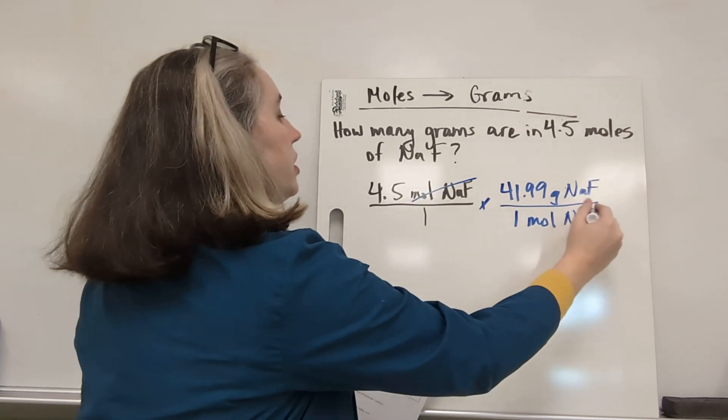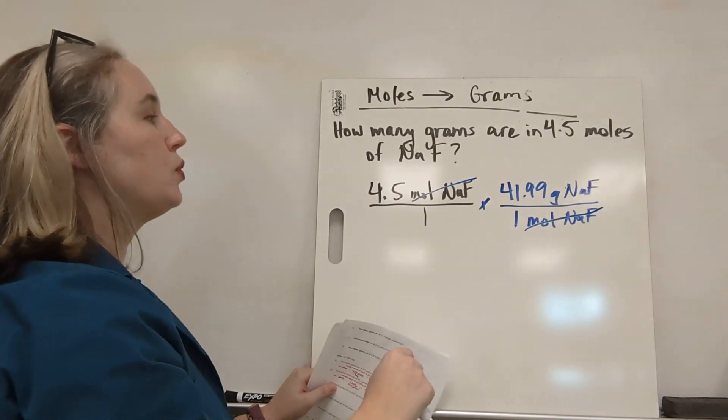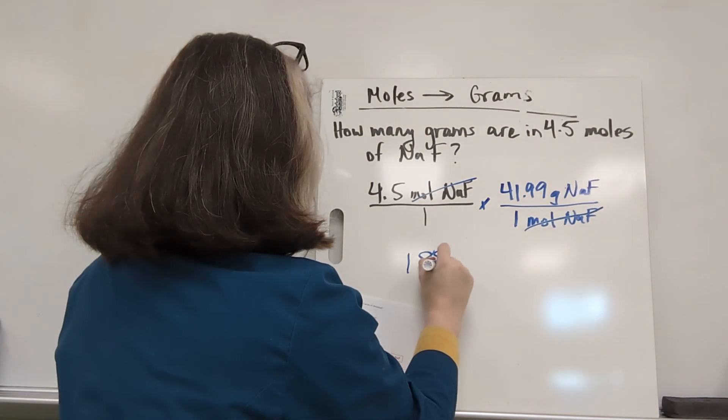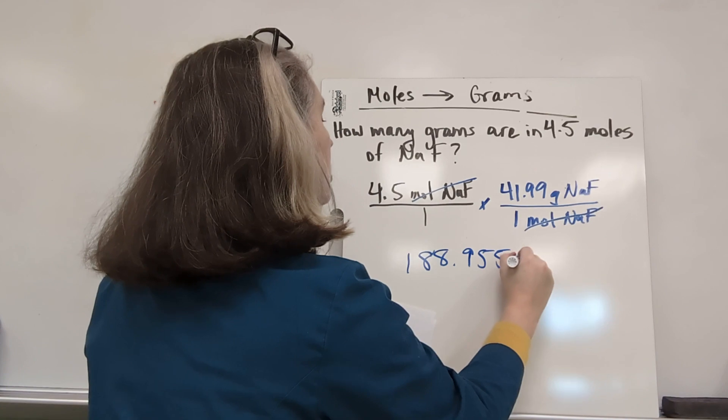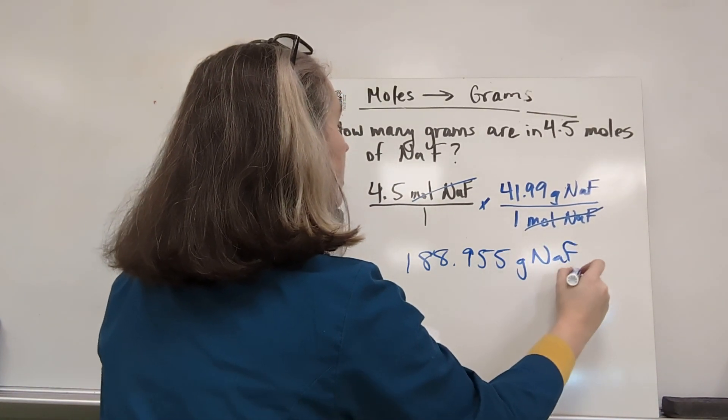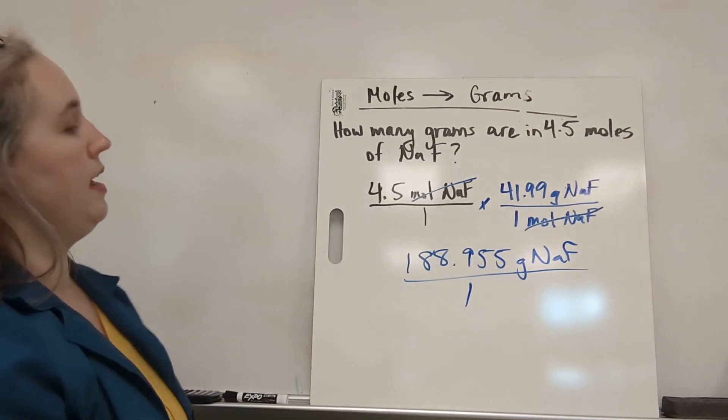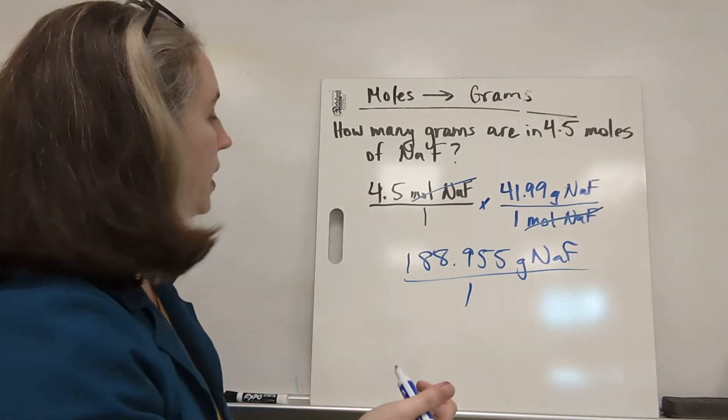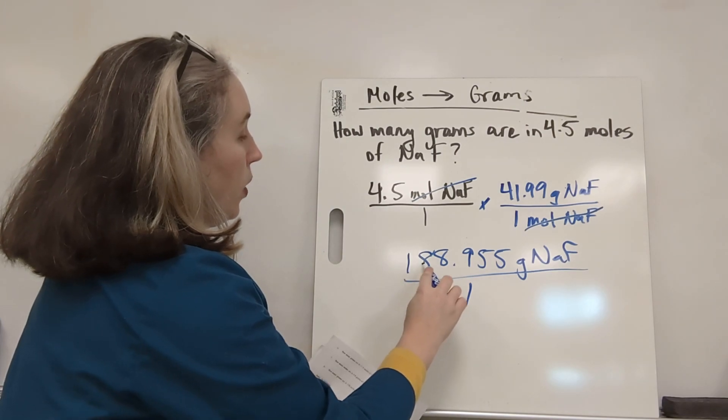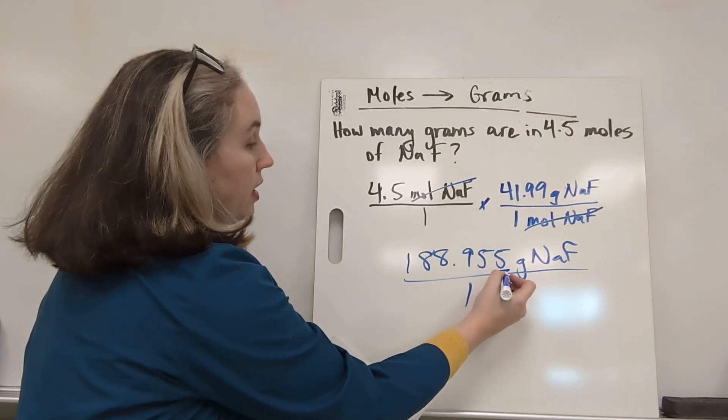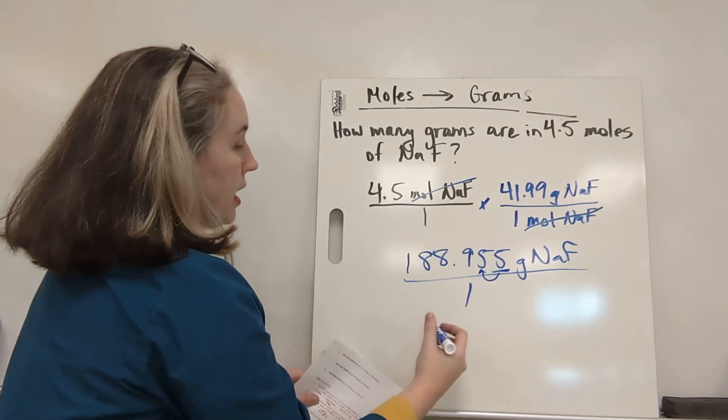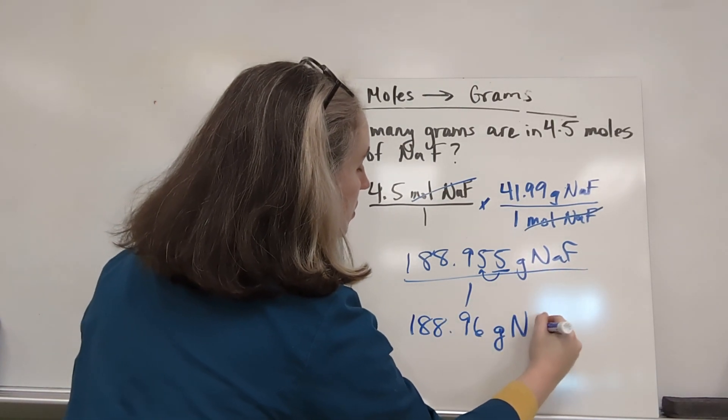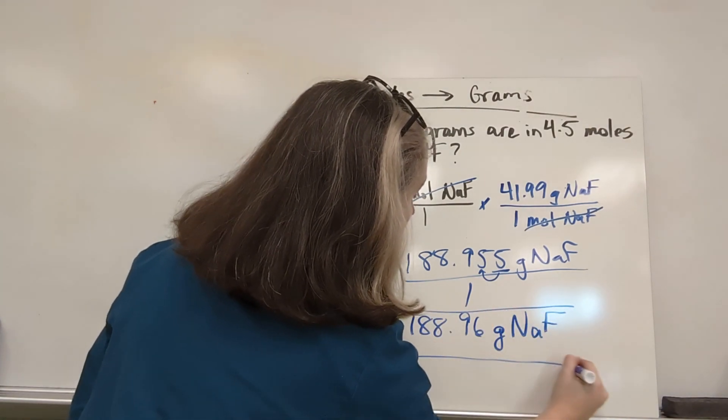So we're going to cancel our units, multiply across. 4.5 times 41.99 grams is going to give us 188.955 grams of sodium fluoride over 1. Right, 1 times 1 is 1. And then you'll round according to your teacher's instructions. So in my case, we're going to be rounding to the hundredths place. So if that's the case, then I'll have 188.96 because this 5, 5 and above, we're going to round up. So 188.96 grams of sodium fluoride. That's the full answer.